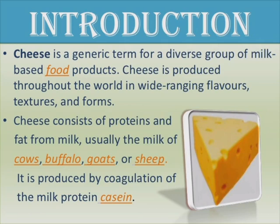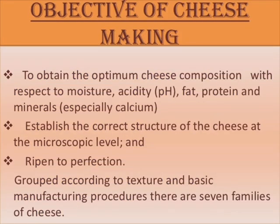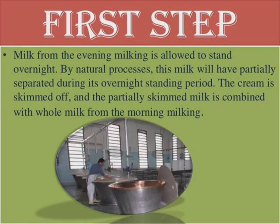Cheese is produced by coagulation of the milk protein, that is casein. The objectives of cheese making are: to obtain the optimum cheese composition with respect to moisture, acidity (pH), fat, protein, and minerals — especially calcium — and to establish the correct structure of the cheese at the microscopic level and ripen it to perfection. Grouped according to texture and basic manufacturing procedures, there are seven families of cheese.